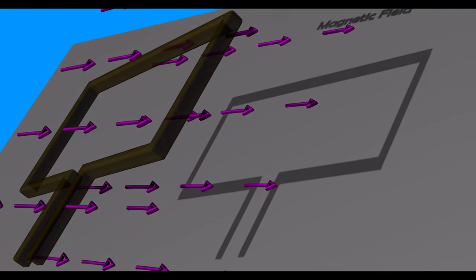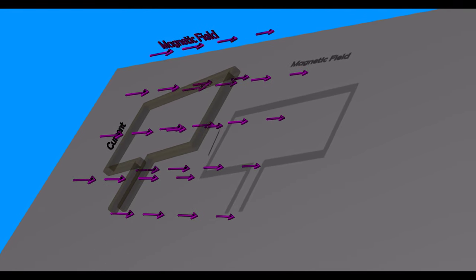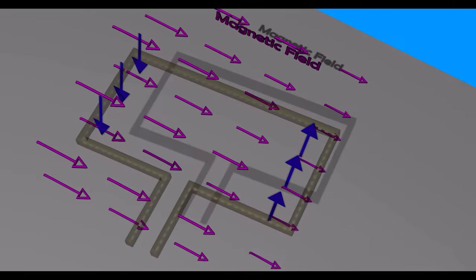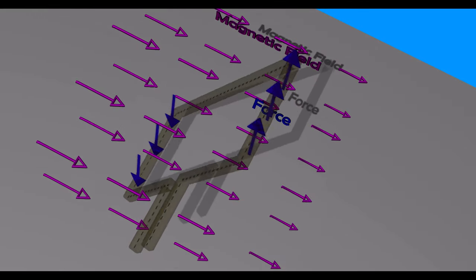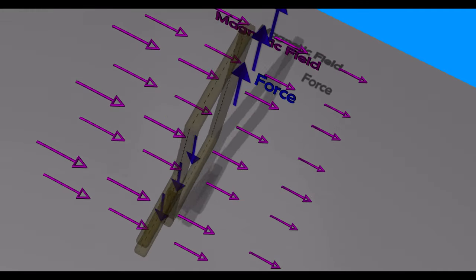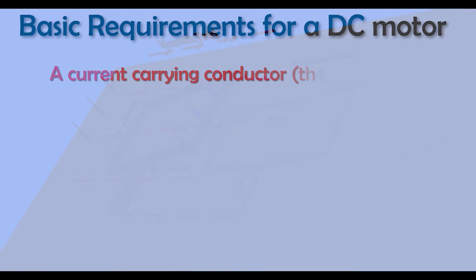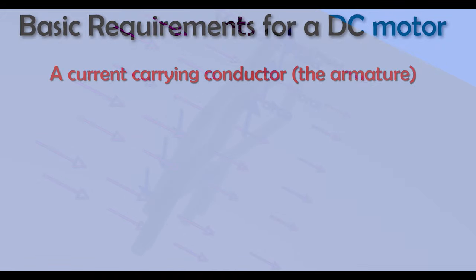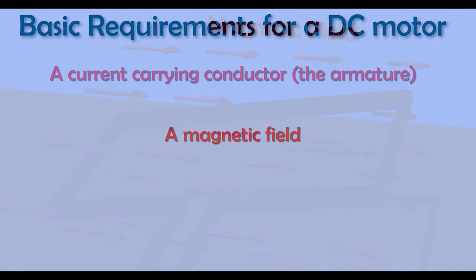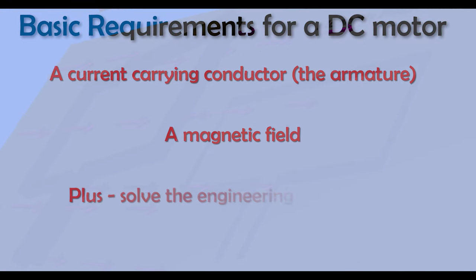In practical terms, it means we can make a conductor move if we can find some way to pass a current through a conductor in the presence of a sideways magnetic field. This in essence is how all DC motors work, and when we start talking about different types of DC motor, it's important to remember that there are only three basic requirements. First, we need a current-carrying conductor.